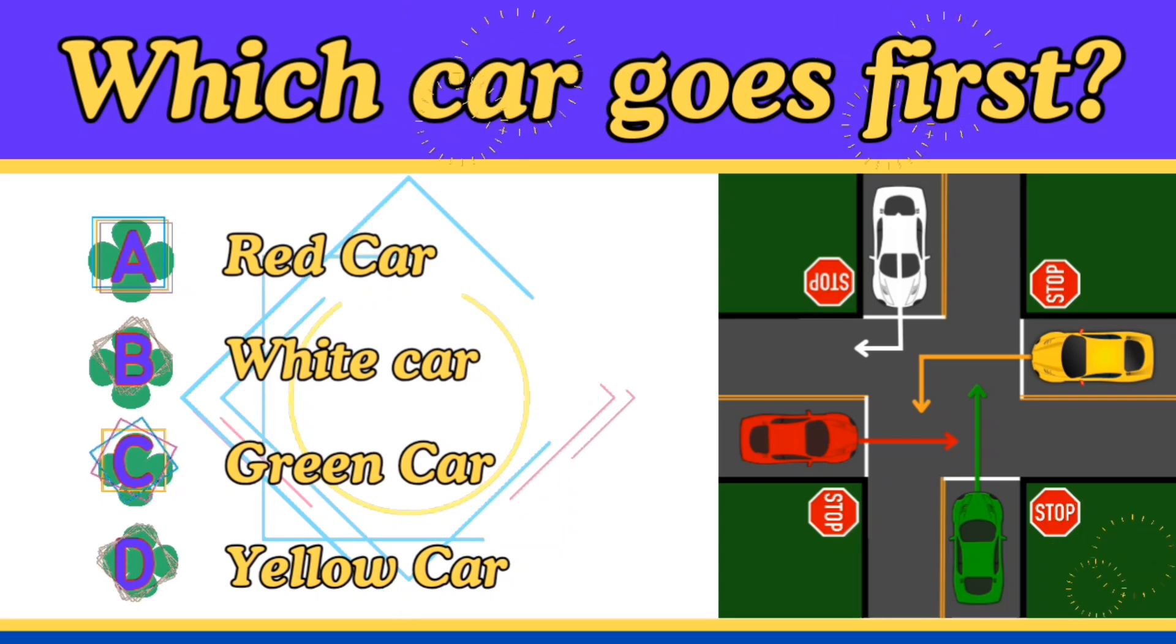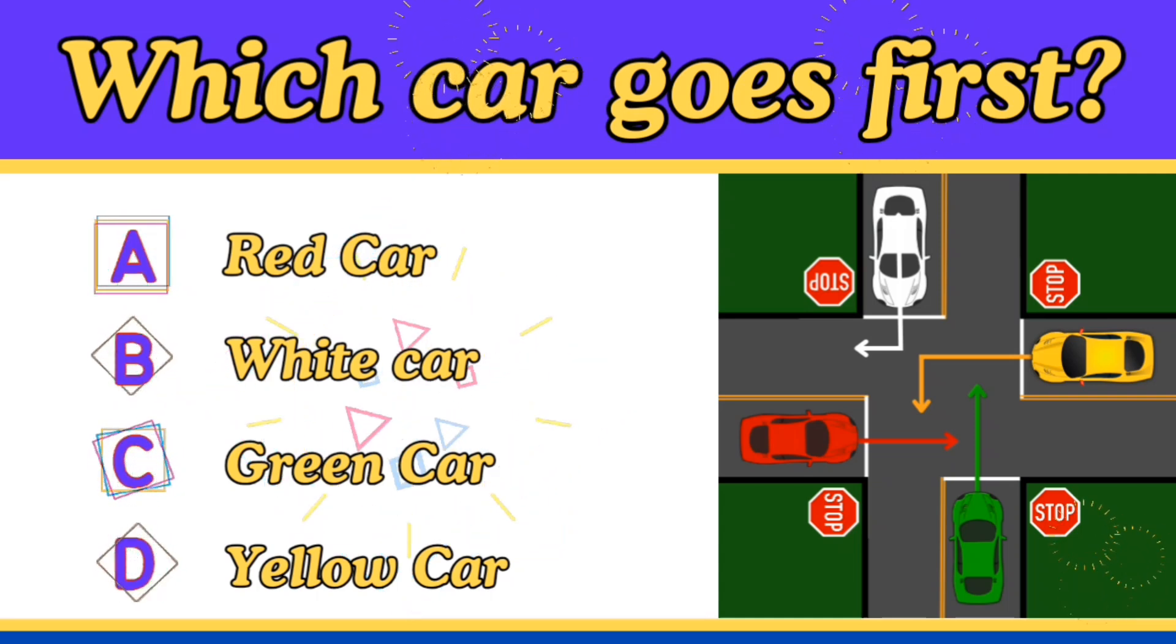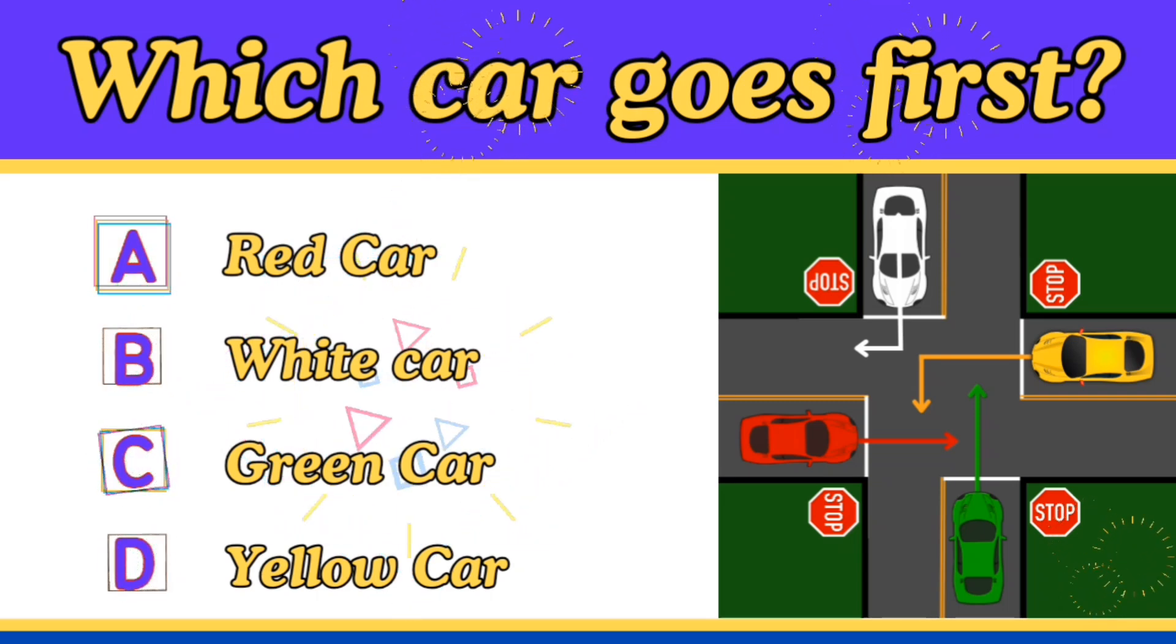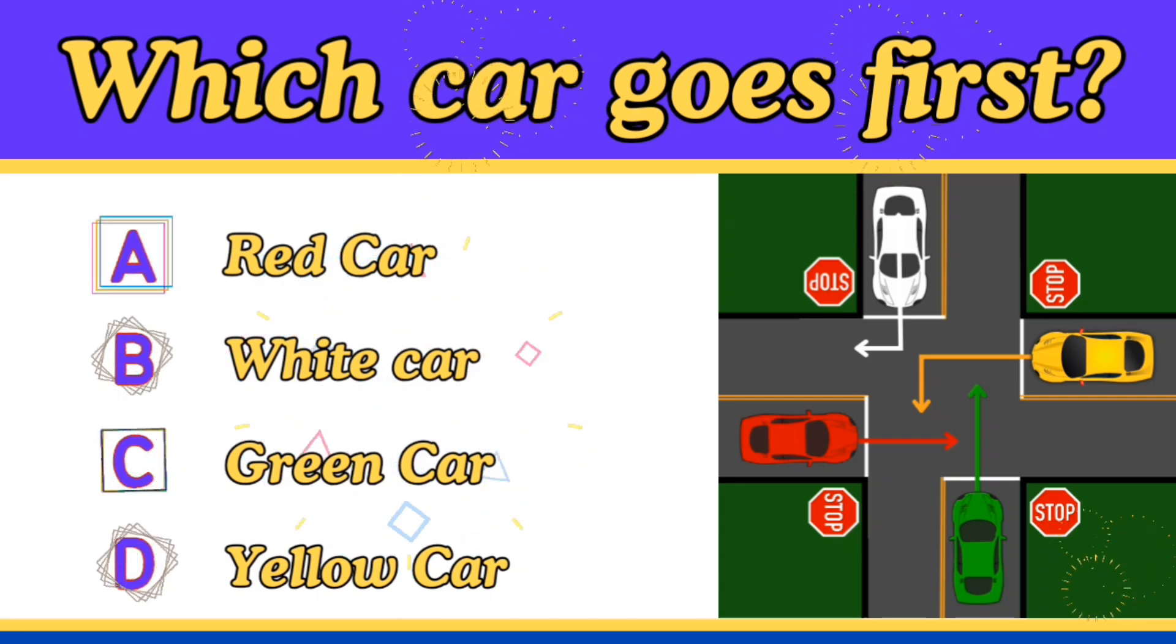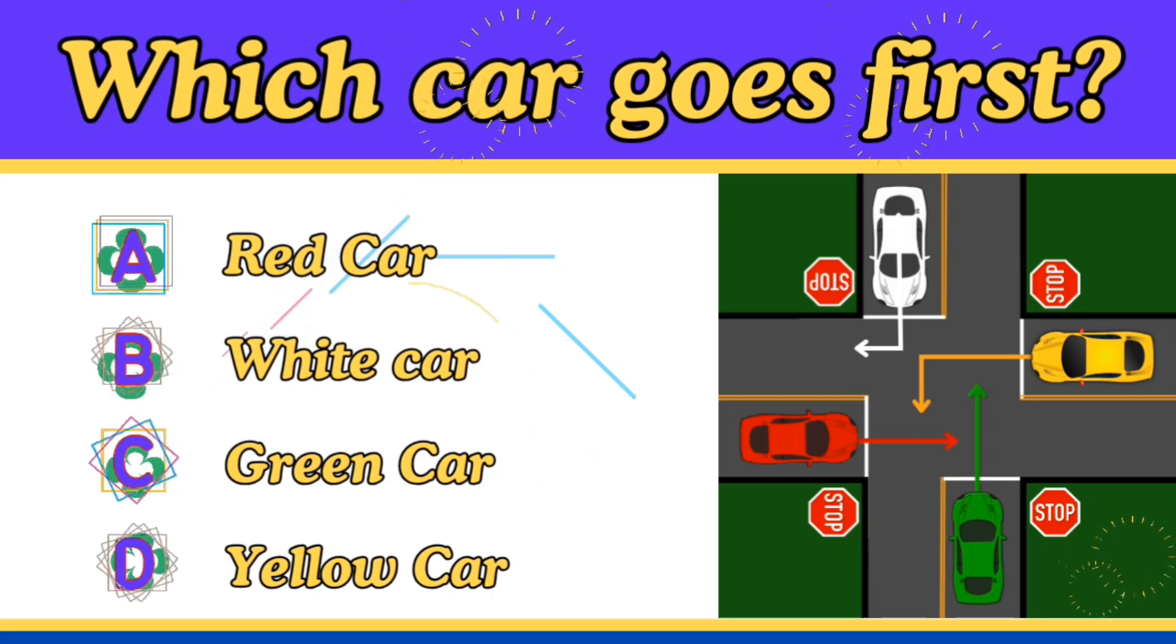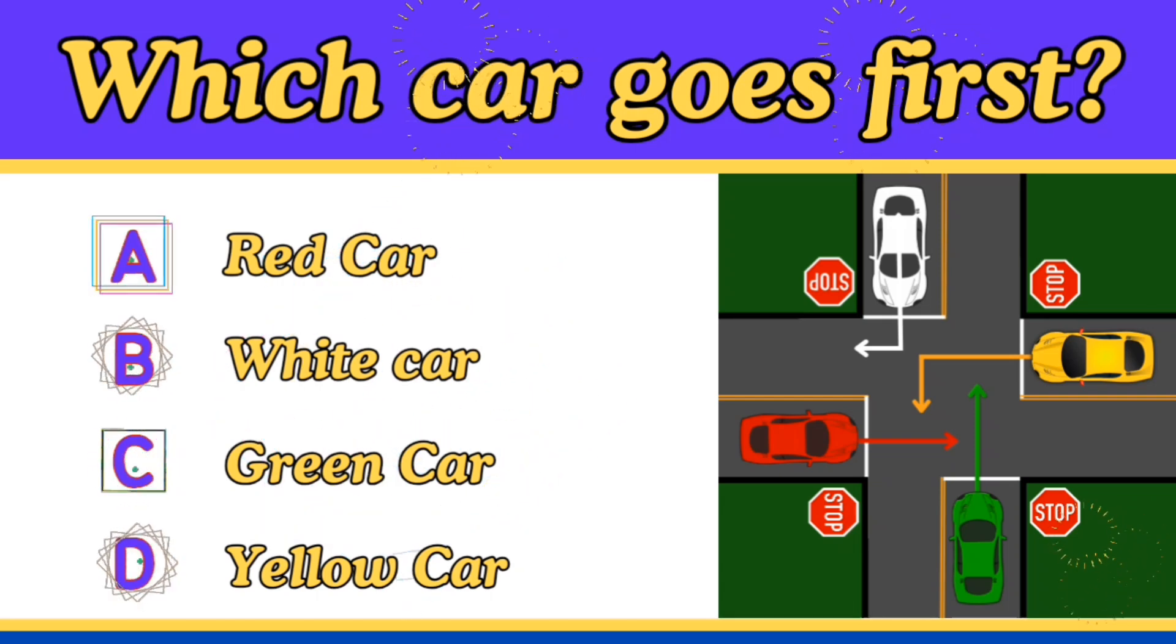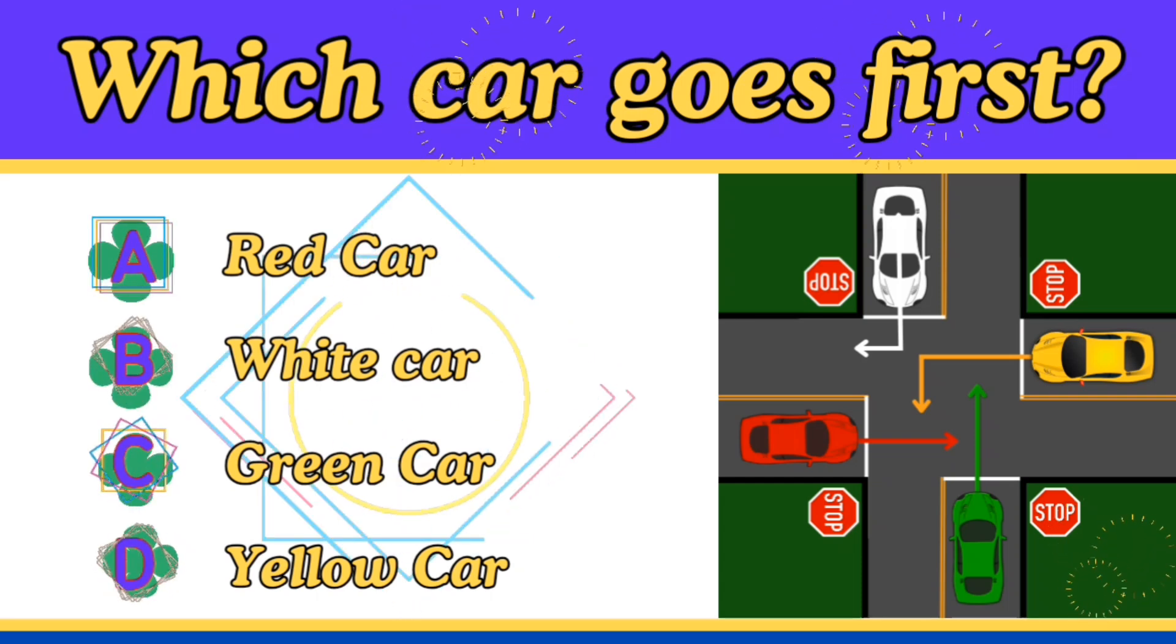Then another rule states that if several drivers reach the four-way stop intersection at the same time, then the car on the left must give right of way to the car on the right. So with that road rule in mind, we can note that the white car intends to turn left, of which that doesn't really interfere with the movement of the car coming from its right, which is the red car. So the white car can safely turn right at this intersection and be the first car to go.